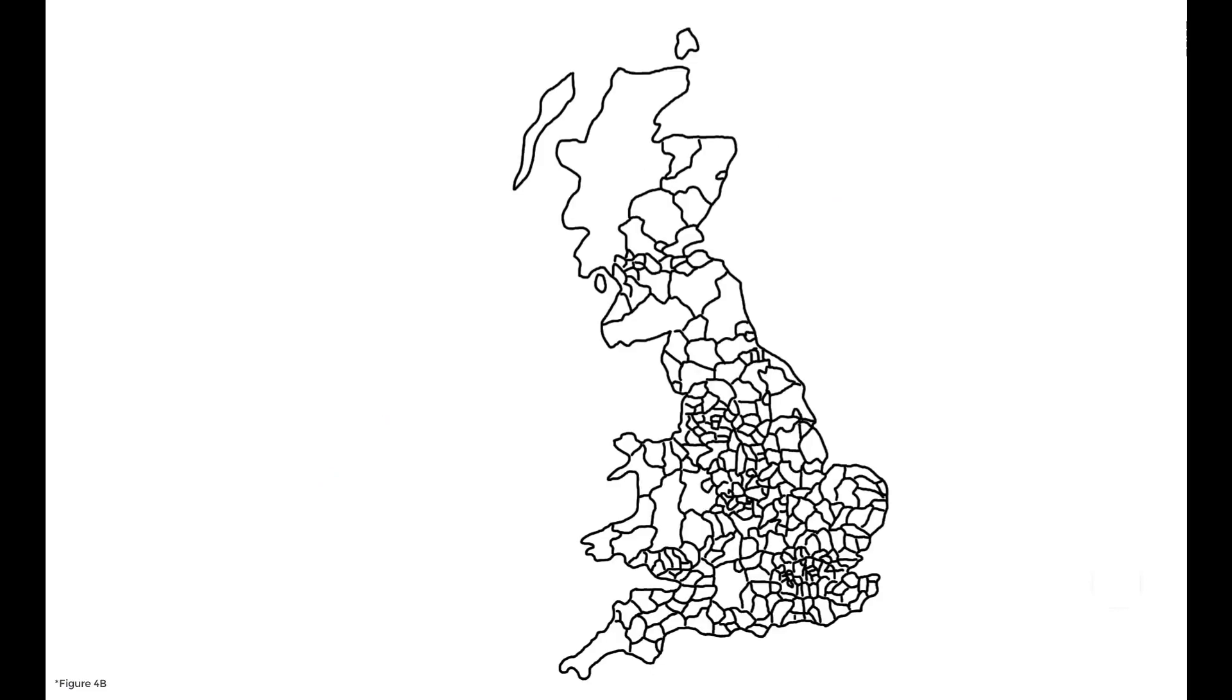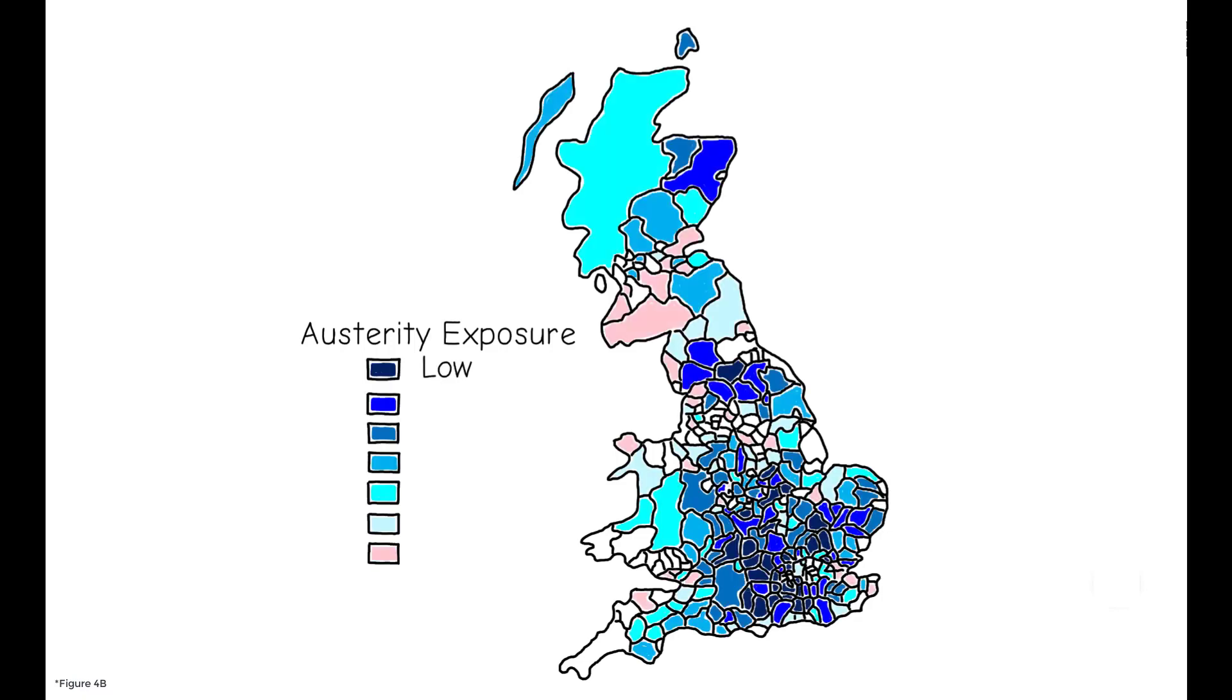To examine this more precisely, the author uses geographic variation in local exposure to the welfare cuts. While welfare spending per person fell by 23.4% over this period, that aggregate number hides substantial variation at the local level, with the sharpest reductions hitting the poorest areas of the country.